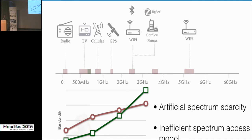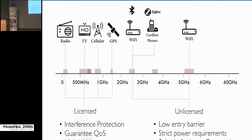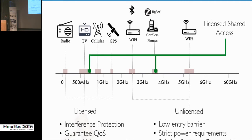This scarcity is mostly due to inefficient regulatory spectrum access models. As discussed before, we have licensed and unlicensed spectrum access models: licensed spectrum access provides interference protection but comes at a high initial cost, while unlicensed spectrum has a low entry barrier but makes it very difficult to guarantee quality of service. License shared access is an upcoming spectrum access model that tries to bring the best of both worlds — offering interference protection at a low entry cost.